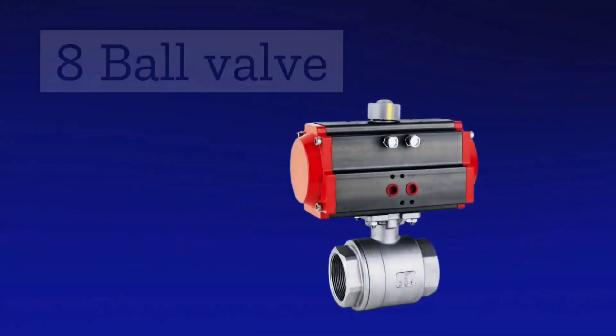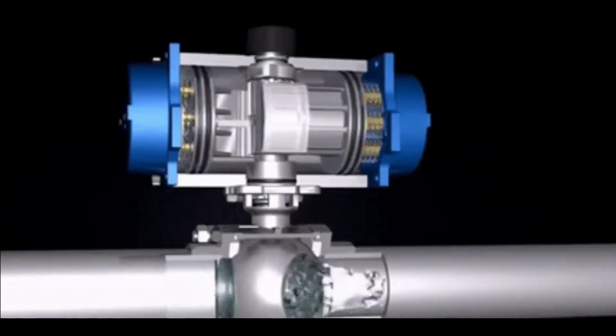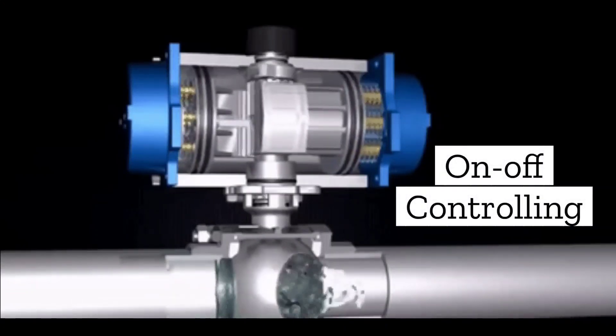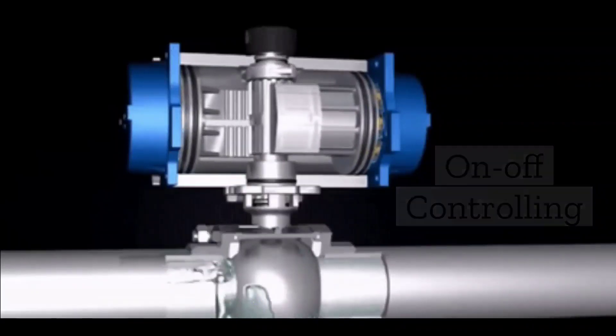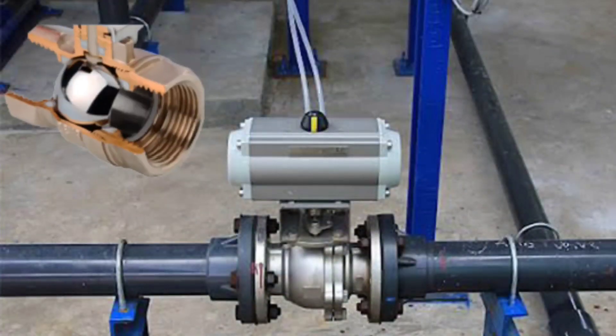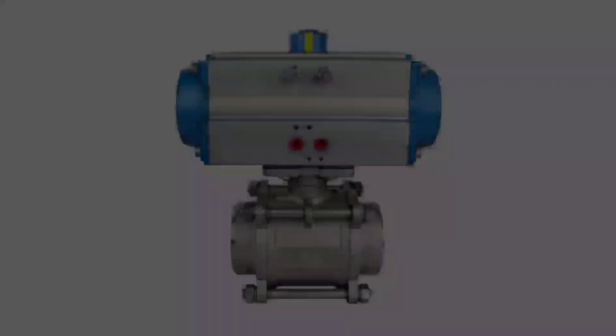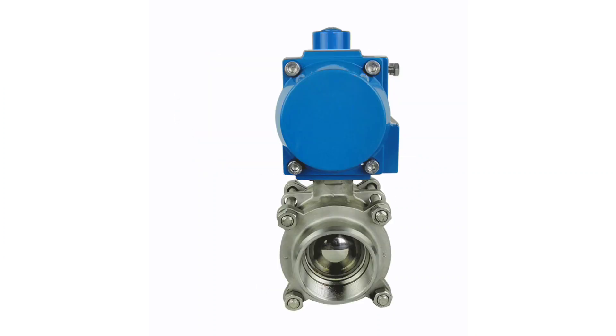The next one is ball valve. There are some control valves which are only on and off. This is called on-off controlling. There is a ball in these valves which operates to pass and stop the flow of fluid. Hence they are called ball valves.